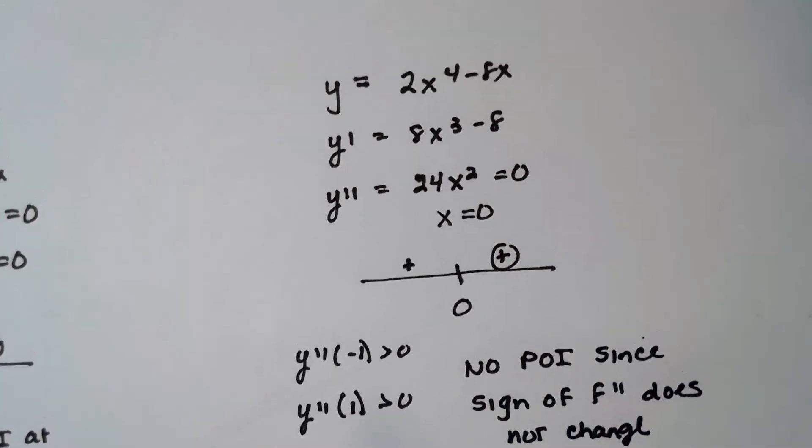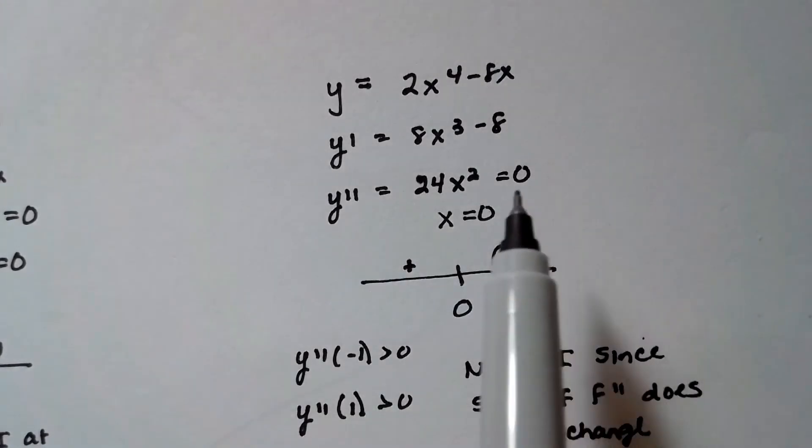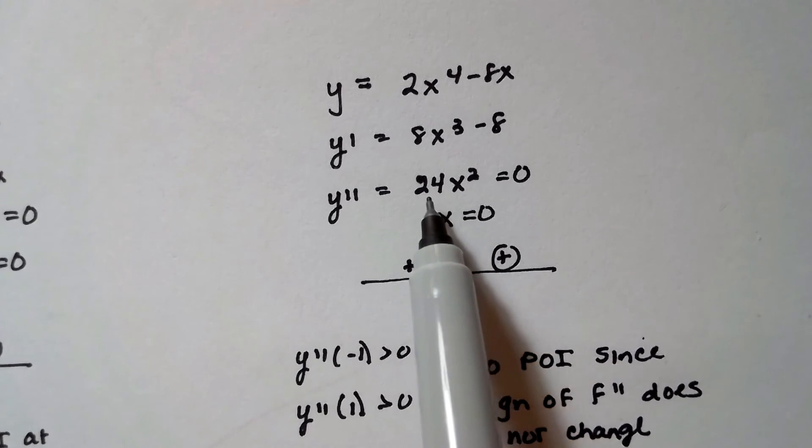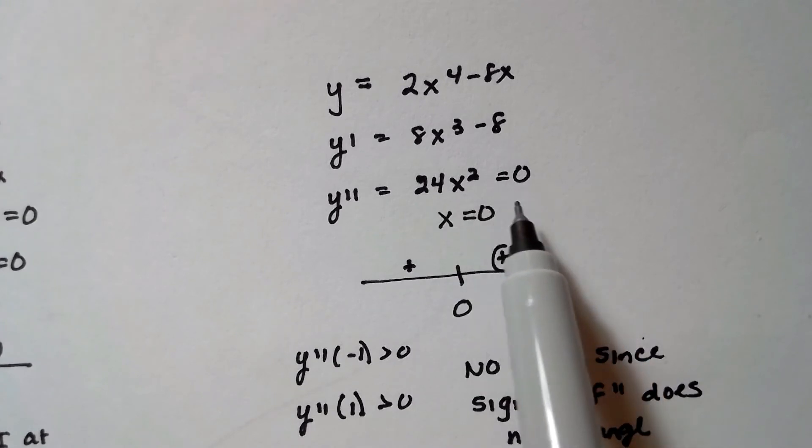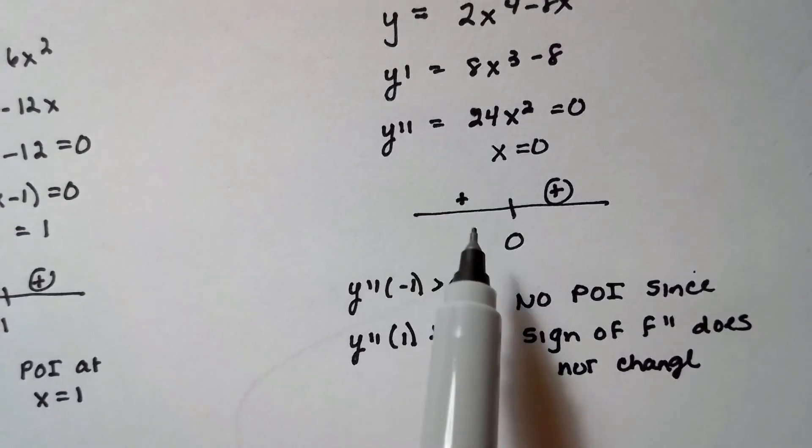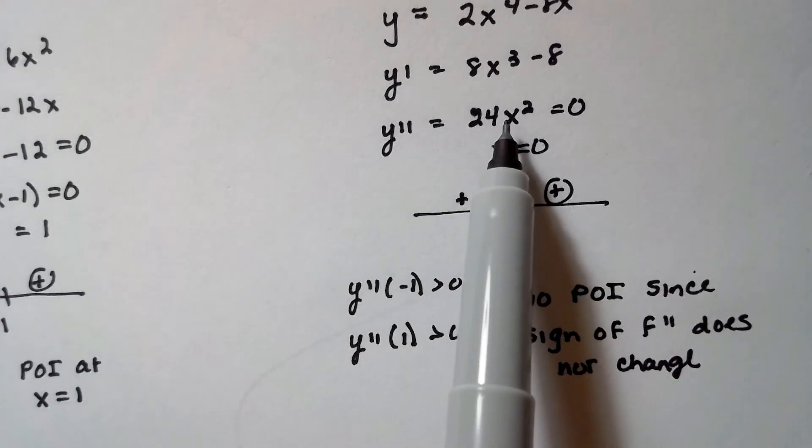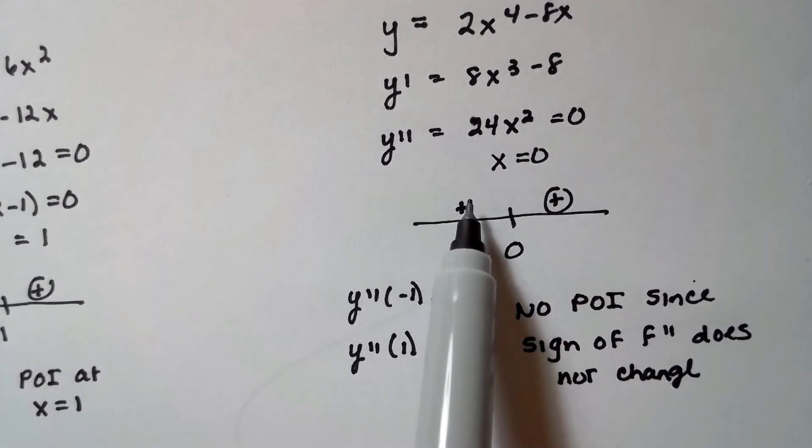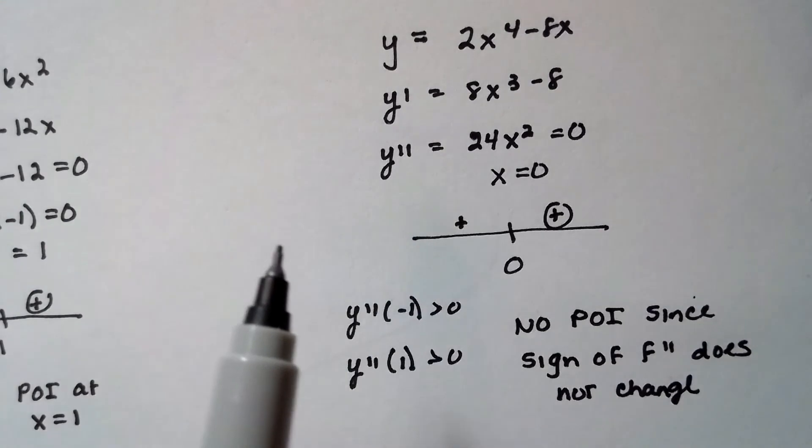The second case, again, I took two derivatives, set it equal to zero. So x just equals zero here. I mean, you get 24 x squared, you solve that thing, it's zero. So I put it on a wiggle graph, and I plugged in a negative one. Well, if I plug in a negative one and square it, it's gonna be a positive one. So 24 times one is a positive number. So the derivative is positive to the left of zero.